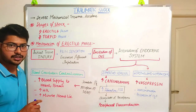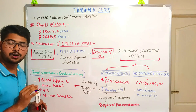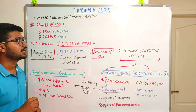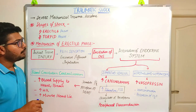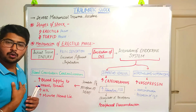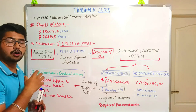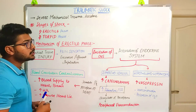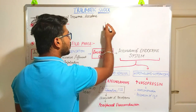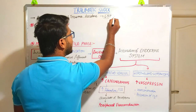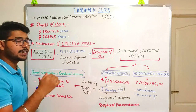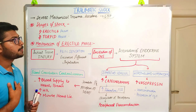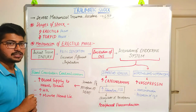We are going to discuss about traumatic shock. In my previous video, I have already explained all about shock. If you haven't watched that, please go to my playlist of pathophysiology. In traumatic shock, there will be a certain kind of injury to our body — mechanical trauma or accident — that will lead to a critical condition known as shock, which will acutely decrease the blood pressure.